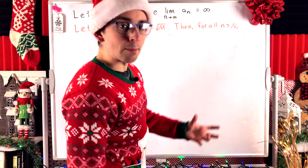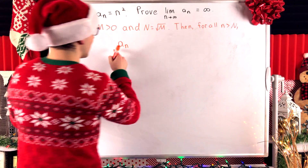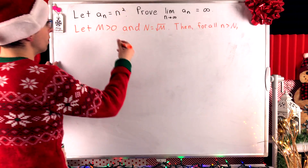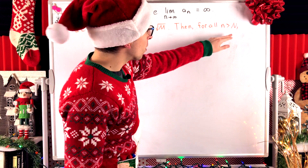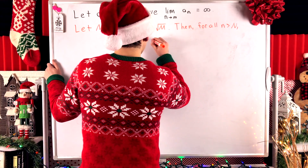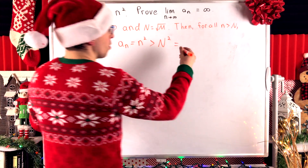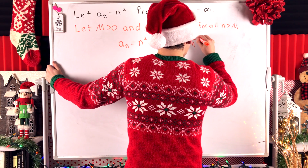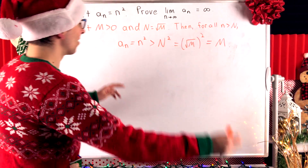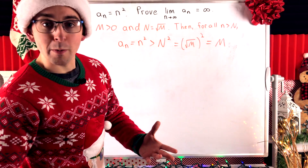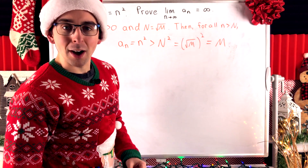For all n greater than big N — for all terms after this certain point in the sequence — a_n, the term of the sequence, is by definition equal to n squared. But since n is greater than big N, n squared must be greater than big N squared. However, big N equals the square root of m, so this is equal to the square root of m squared, which equals m. Clearly, a_n — this arbitrary term of our sequence after a certain point — is greater than the arbitrary positive number m.